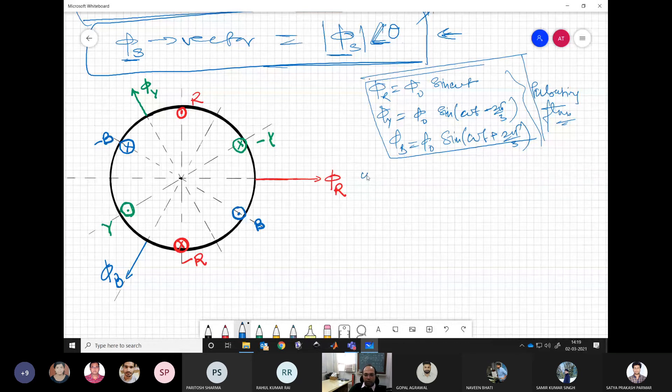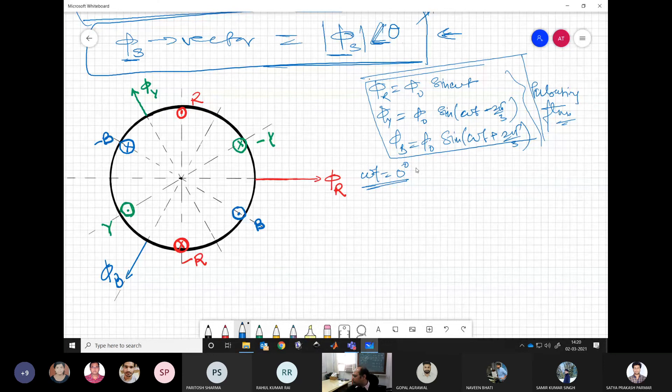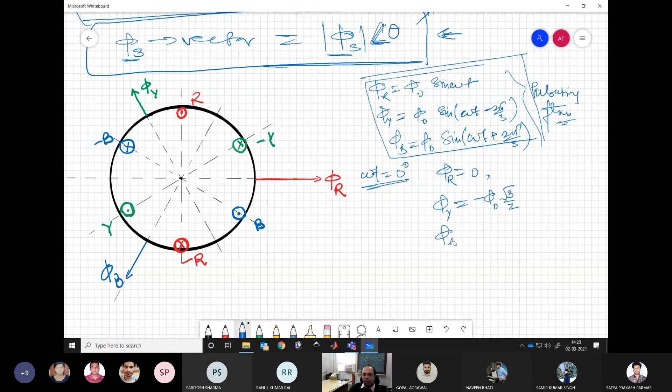So now when we have pulsating fluxes and we do the space distribution, what we get basically - step by step we were seeing what is the value of different flux components, and then we can see what it is going to give us. So let's say at omega t equal to 0, we have the phi r value equal to 0, phi y value equal to minus phi naught times root 3 by 2, and phi b value is equal to phi naught root 3 by 2.